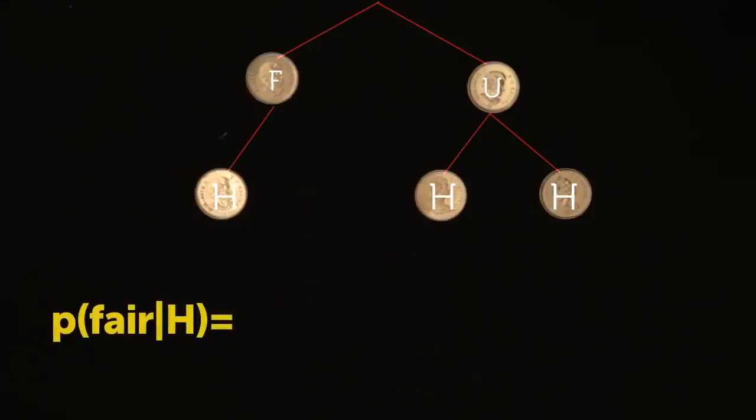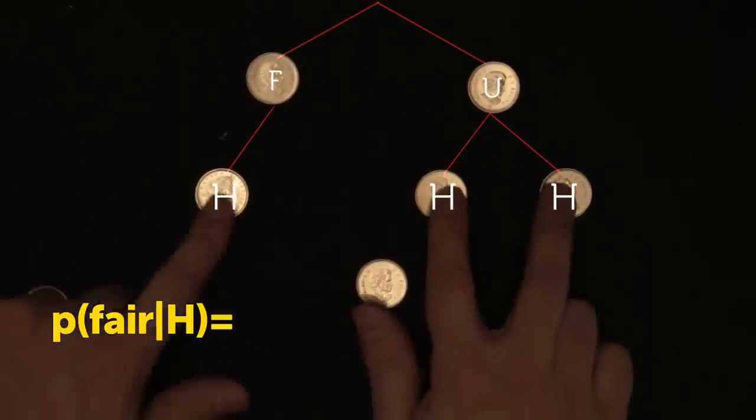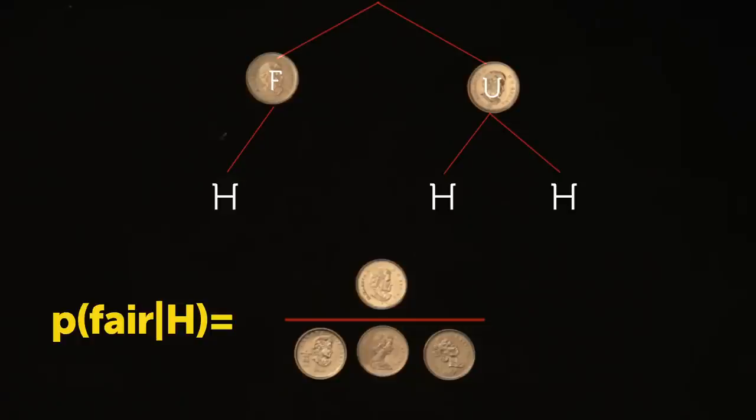So the probability that he chose the fair coin is the one fair outcome leading to heads divided by the three possible outcomes leading to heads, or one third.